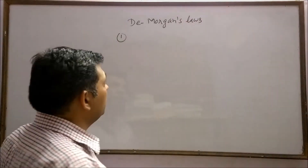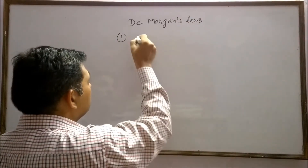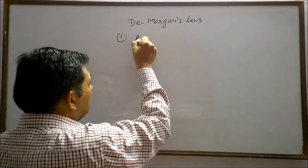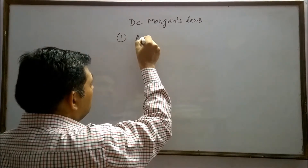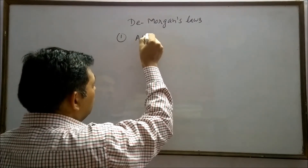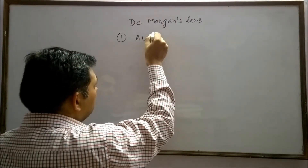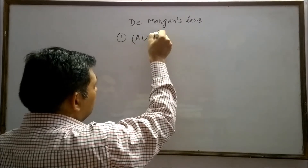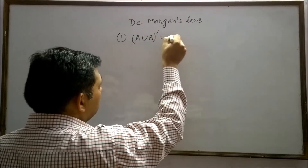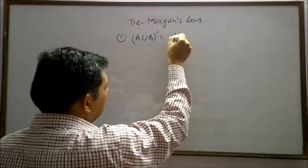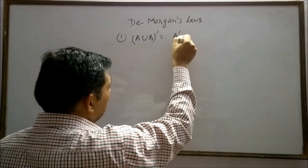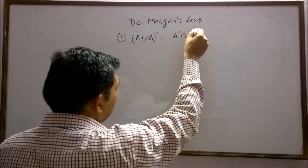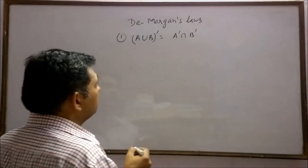The first law of De Morgan states that A union B whole complement is equal to A complement intersection B complement.